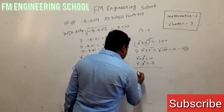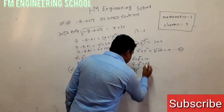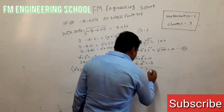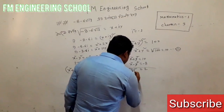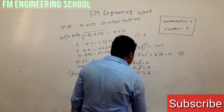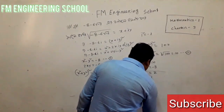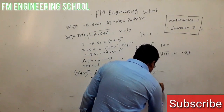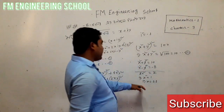Now we have x squared plus y squared equals 10 and x squared minus y squared equals minus 8. Adding these: 2x squared equals 2, so x squared equals 1, and x equals plus or minus 1.